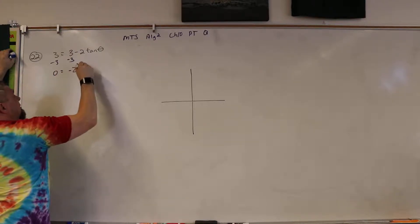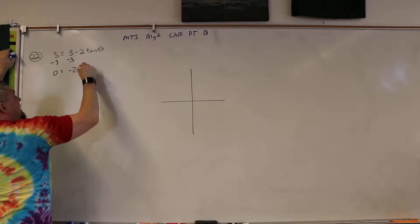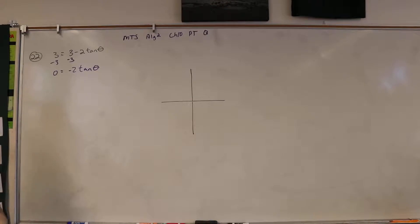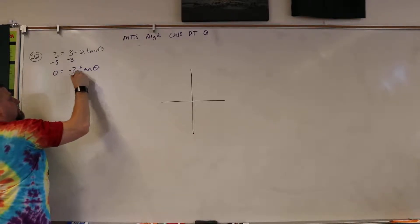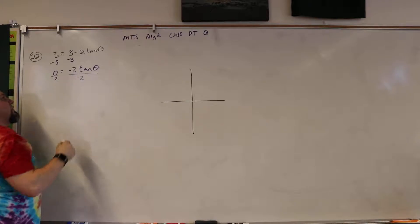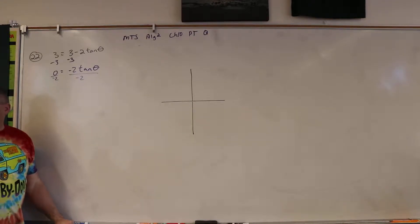Okay, so we've got negative two tangent theta. What's going to happen here? This is a fun one. Do you still multiply? Divide by negative two, right? Yeah. Okay, is that still zero? Yeah.